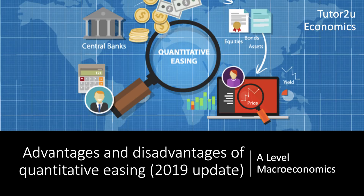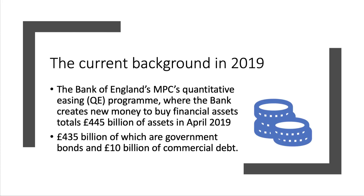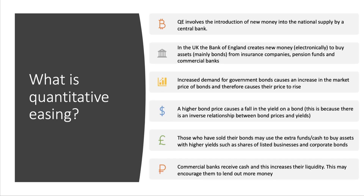Welcome to a macro video. In this short video we're going to take a look at some of the main advantages and the main disadvantages of quantitative easing, otherwise known as QE. The current background in 2019, ahead of the exams, is that in the UK context the Bank of England's quantitative easing program now values 445 billion pounds worth of assets, the vast majority of which has been the purchase of government debt — bonds — and 10 billion pounds of commercial debt bought by the Bank of England.